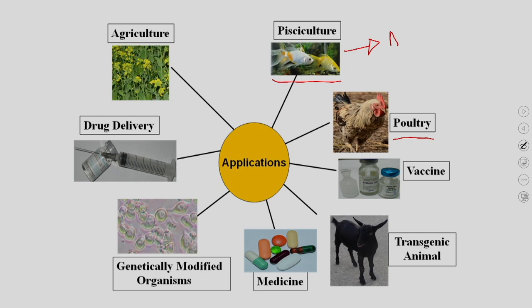Earlier, if any disease or infection occurred in poultry, it spread very fast throughout the whole colony, causing heavy losses. They have developed different types of vaccines and transgenic animals, which provide new traits to existing animals. With knowledge of different drug targets and bioactive molecules present in plants, they have been able to develop different types of medicines for treating diseases.